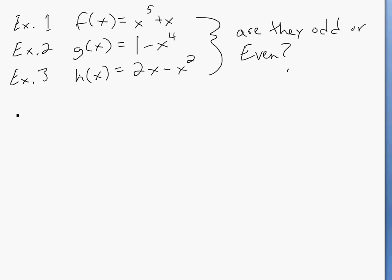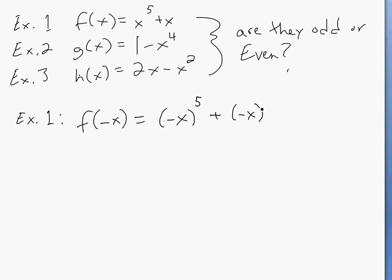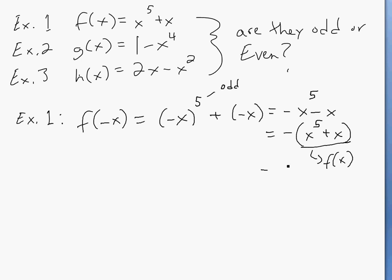For example 1, all you do to check it is put f of negative x inside. So f of negative x equals negative x to the 5th plus negative x. This simplifies to negative x to the 5th minus x, which equals negative of x to the 5th plus x. As you can see, this is negative f of x, so number one is odd.